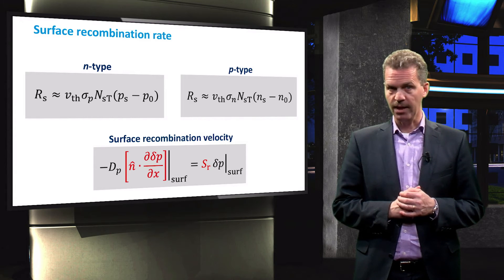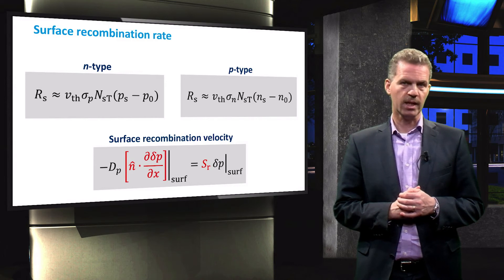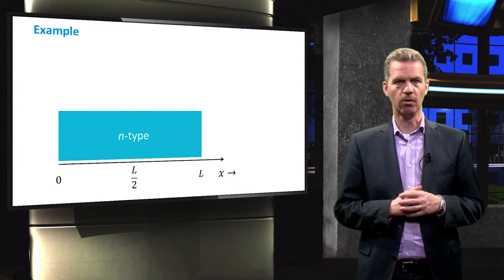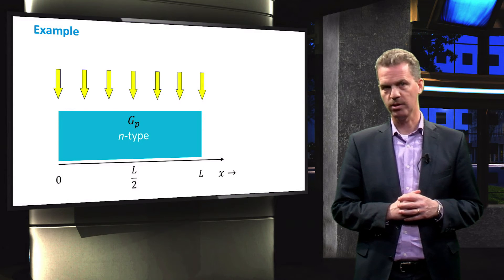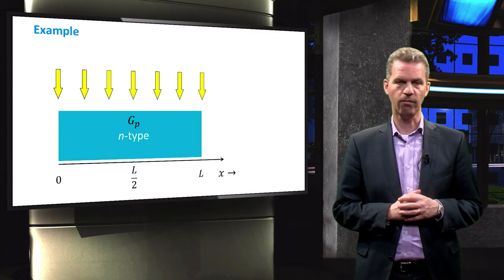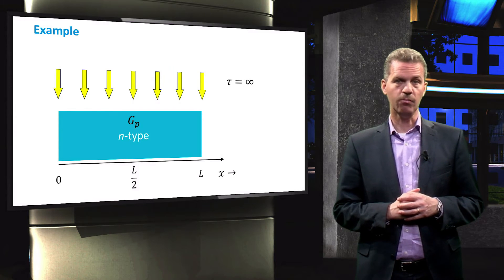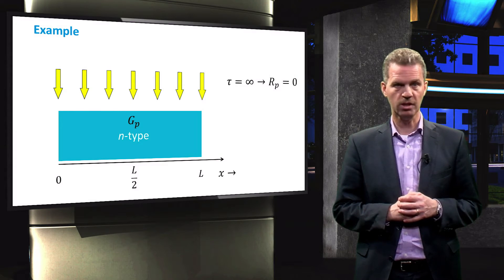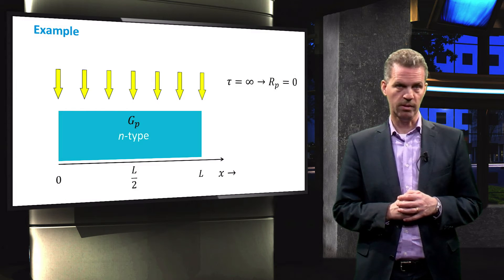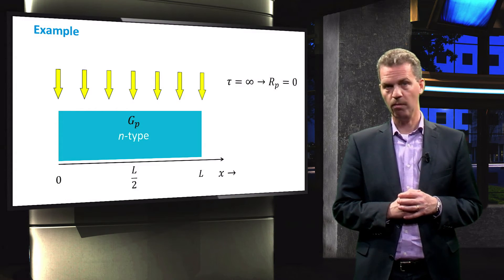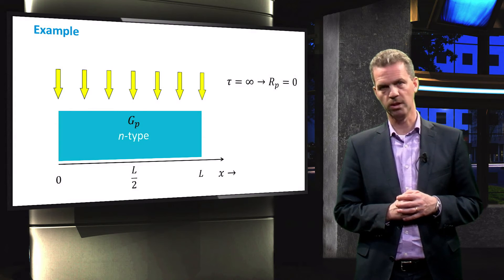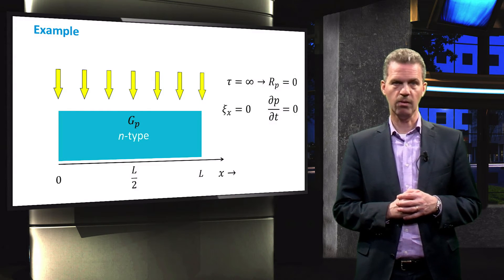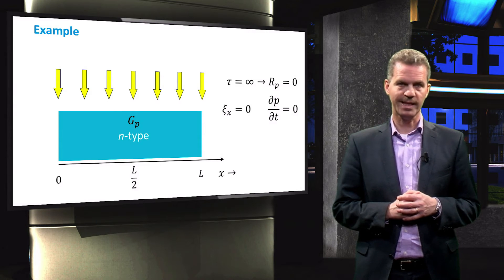In order to improve our understanding of the recombination velocity, we look at an example. We imagine a slab of n-type material which is illuminated with a uniform light source, resulting in spatially uniform generation. For simplicity, we assume an infinite carrier lifetime in the bulk of the material, resulting in a recombination rate equal to zero. We also state that the electric field strength in the semiconductor is zero, and that we are considering a static or steady-state situation.